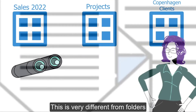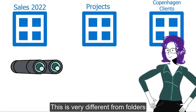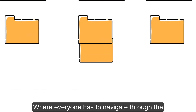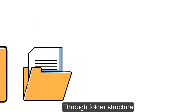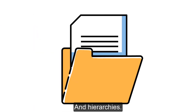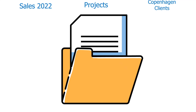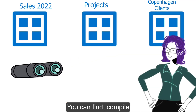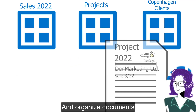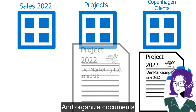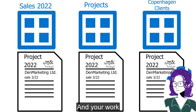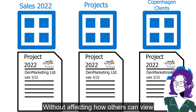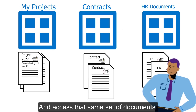This is very different from folders, where everyone has to navigate through the information in the same way through folder structure and hierarchies. With mFalls views, you can find, compile, and organize documents in a way that makes sense to you and your work, without affecting how others can view and access that same set of documents.